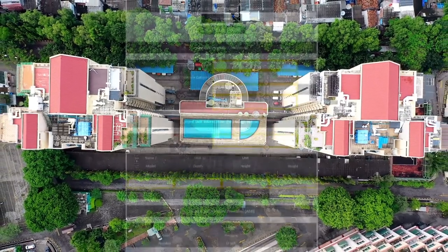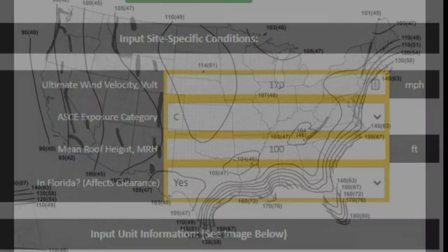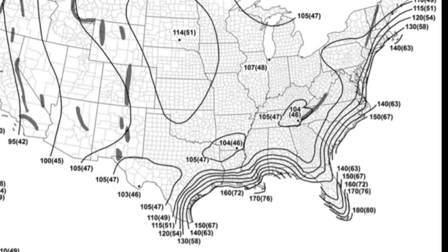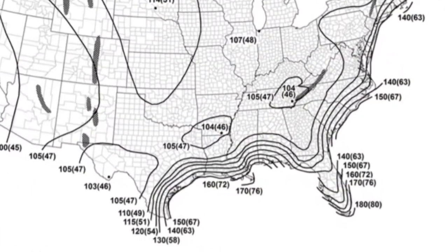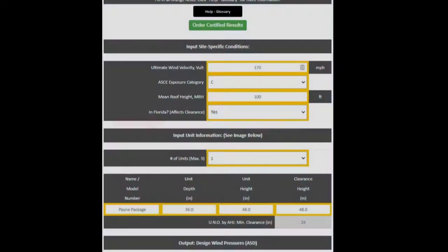The calculator's design variables include the ultimate wind velocity, which is the fastest hurricane-level wind speed expected at a particular location. Remember, a single wind velocity can result in various design pressures based on variables such as roof height, exposure category, unit shape, and more.